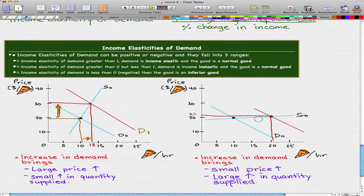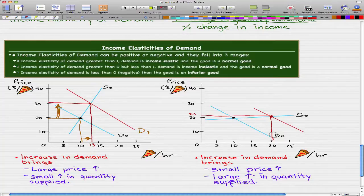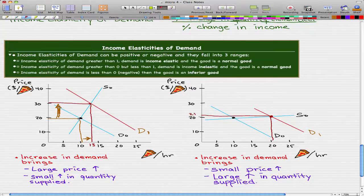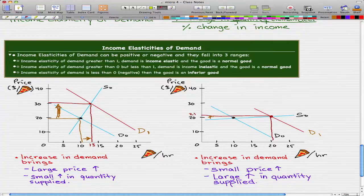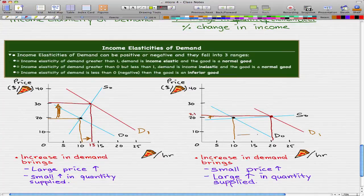Now, for this second graph, what we see here is there's an increase in demand, demand D0 goes to D1, and what we see is that there's actually a small price change, which is from this black dot to this red line, so pretty much like increased by a dollar, and on the other hand, there's a big increase in quantity supplied.